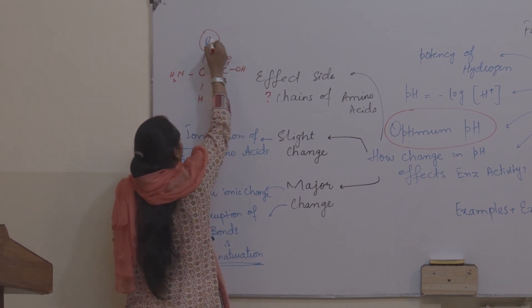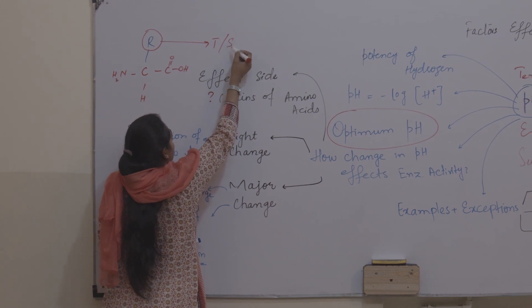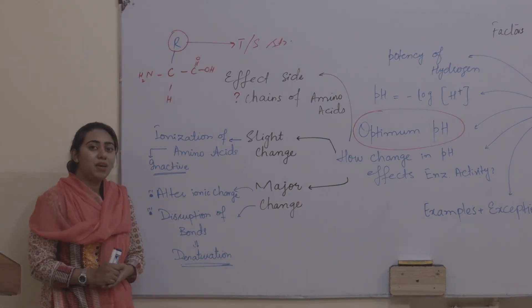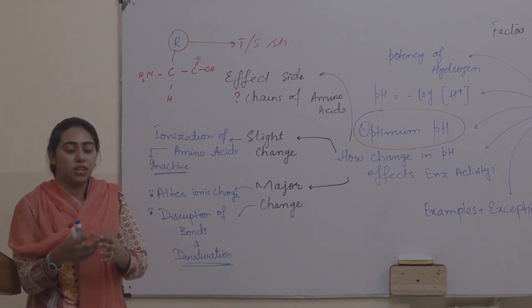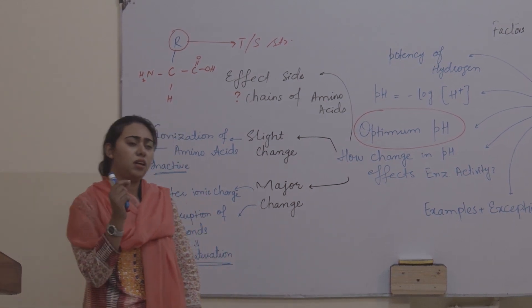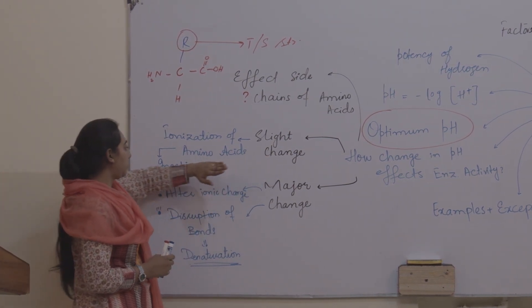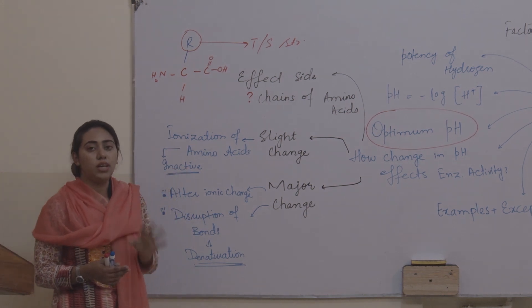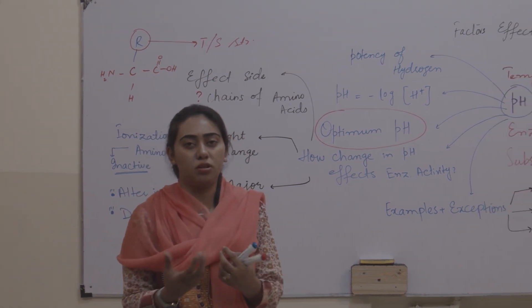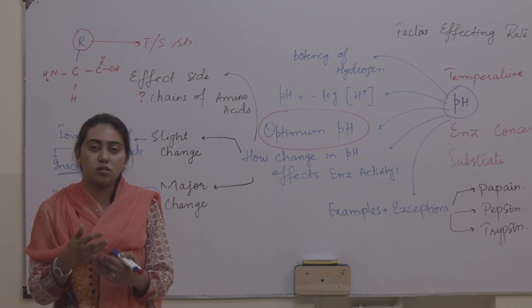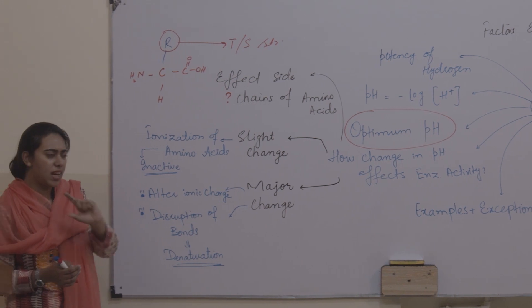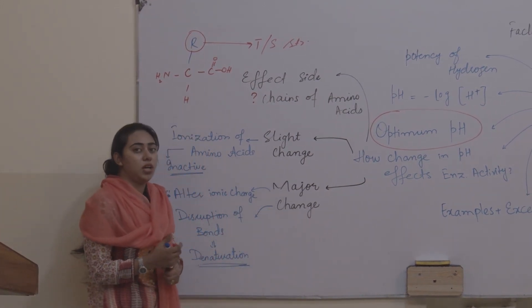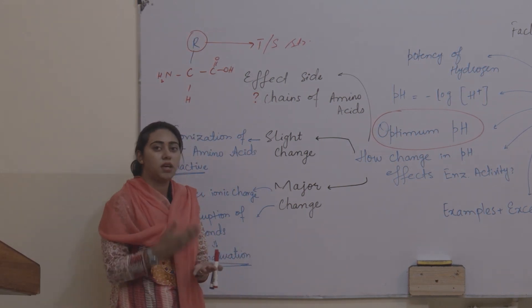So what does pH do? pH is going to affect these side chains of the amino acids, and these side chains are important to maintain the tertiary or secondary structure of the proteins. So pH directly affects the side chains. If there is a slight change in pH — for example, if an enzyme is working at pH 6 and you change it to 6.1 — that is a very small change. A slight change will cause ionization of amino acids. The amino acids will ionize and become inactive, but not denatured. The enzyme will temporarily stop its activity, waiting for the pH range to normalize.